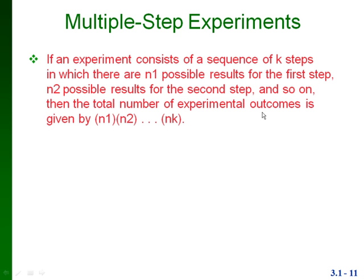This is our second video for chapter 4. We're going to start out talking about multiple step experiments. If we have an experiment that has more than one step, then we look at how many possible results there are for each different step. To get the total number of outcomes in the experiment, we just multiply those numbers of possible results together.